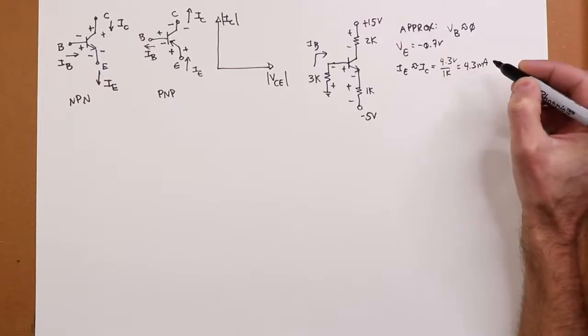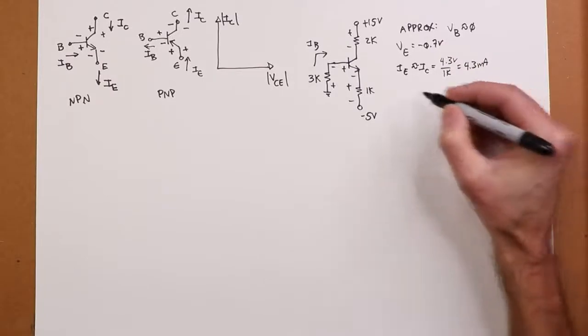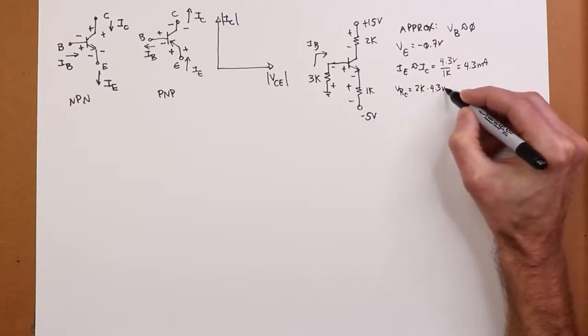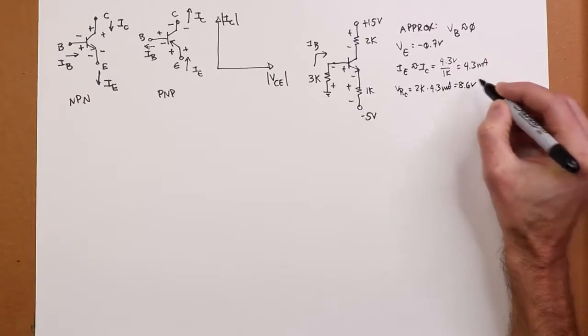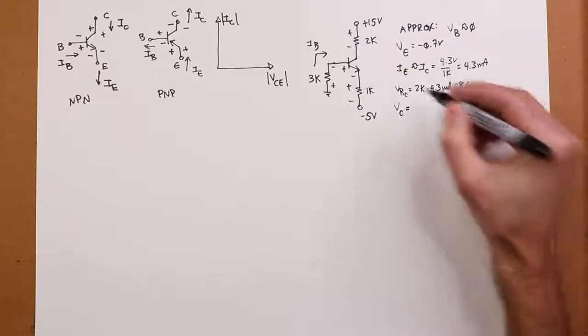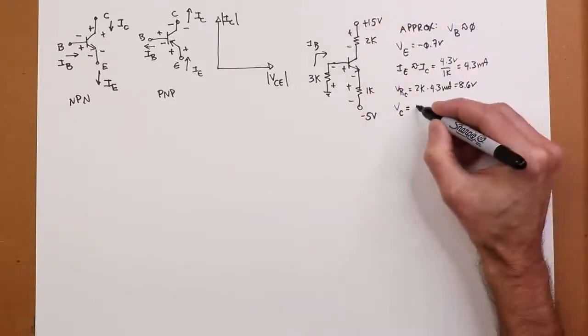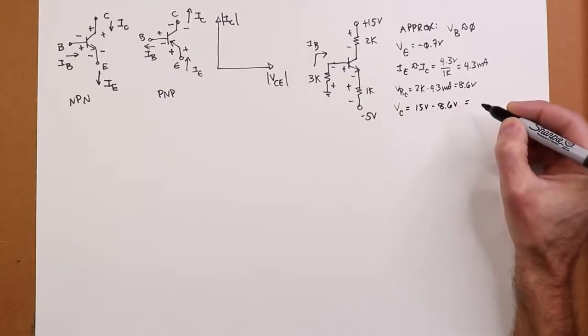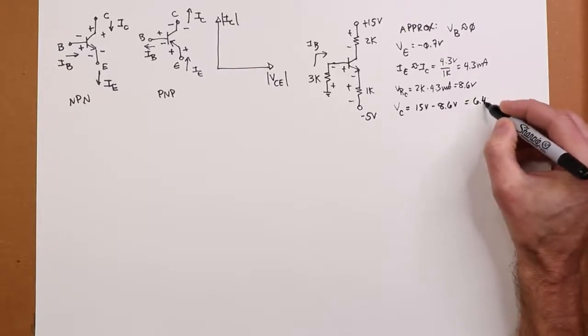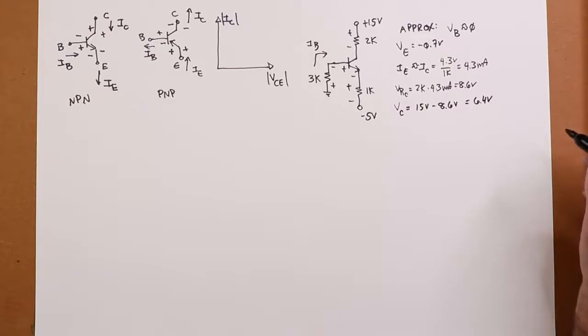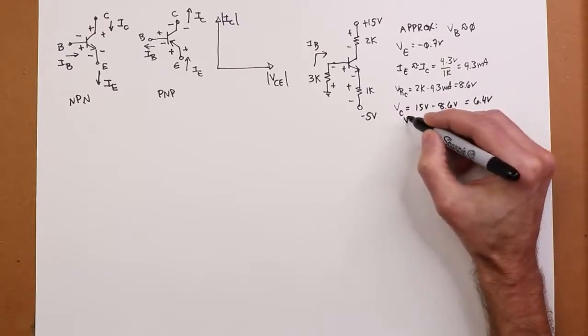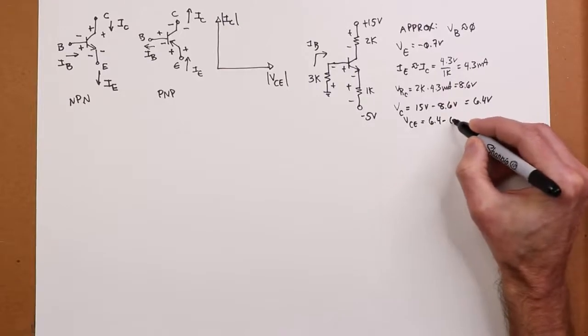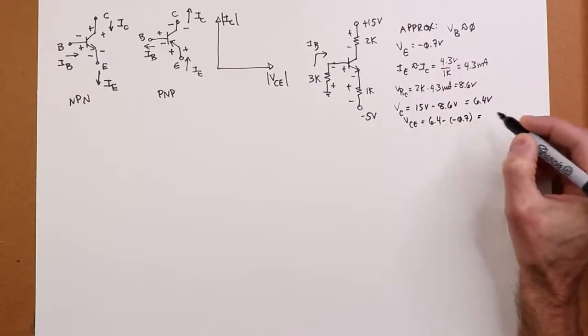Now we can take that and pass that through the 2k. That's going to give us 8.6. And if we subtract that from the power supply, we'll get Vc. So it's Vcc minus V of RC. So that's 15 minus the 8.6. That's going to give us 6.4 volts. And because Ve is minus 0.7, then Vce would be 6.4 minus a minus 0.7, which gets us 7.1 volts.